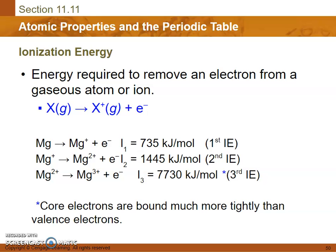The second gets a little bit harder, and the third one harder. It's especially hard to remove core electrons because they are bound much more tightly than valence electrons.